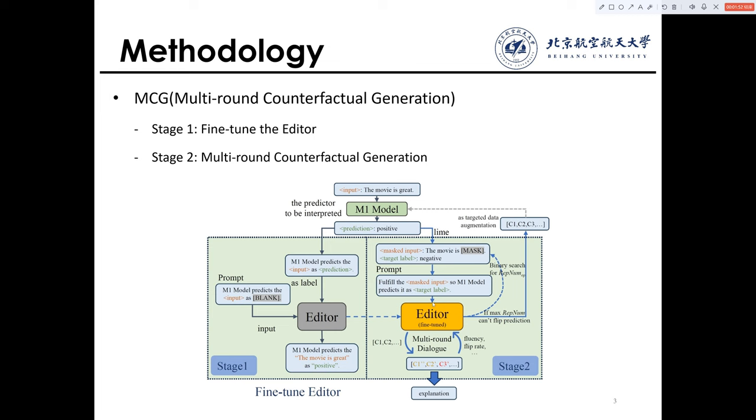MCT optimizes these cases through multi-round dialog. For example, the current text generates three cases. The first flips the prediction and the second and third don't.